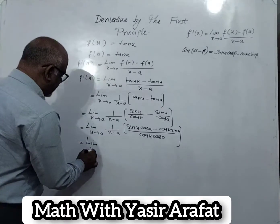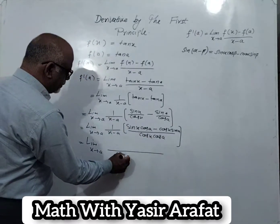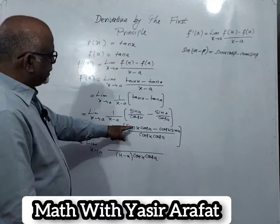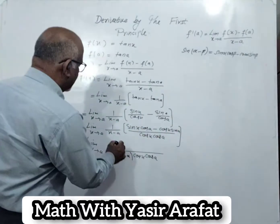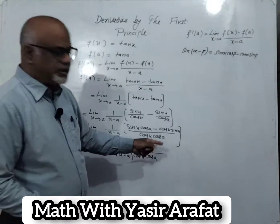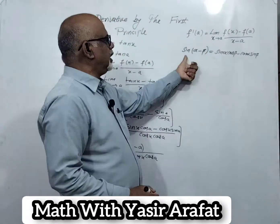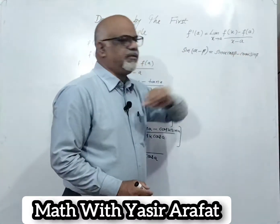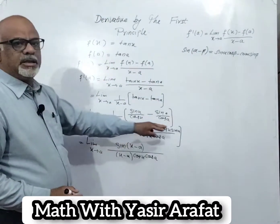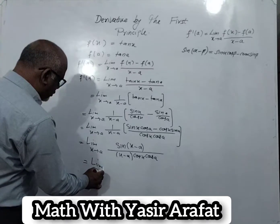So sin x cos a minus cos x sin a equals sin(x minus a). With limit x tends to a, we apply this identity. Now rearranging, we get: limit x tends to a, 1 over (cos x cos a), times sin(x minus a) over (x minus a). We separate the limits: limit x tends to a of 1 over (cos x cos a), times limit x tends to a of sin(x minus a) over (x minus a).